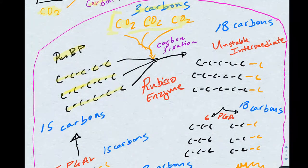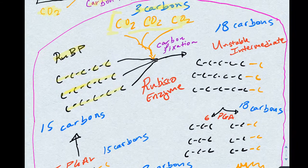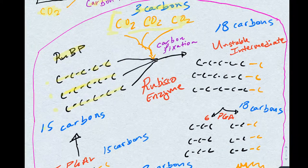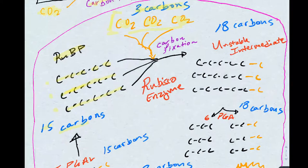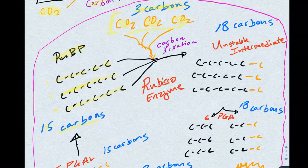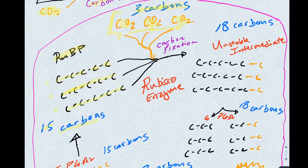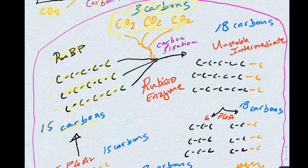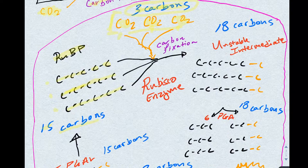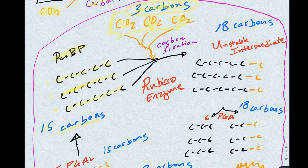Let's first count the number of carbons we have when we start. We have five carbons on each RU-BP for a total of 15 carbons. We have one carbon on each carbon dioxide for a total of three carbons. So, when this fixation happens, we should have a total of 18 carbons.